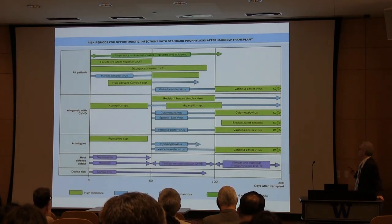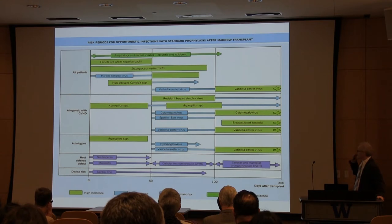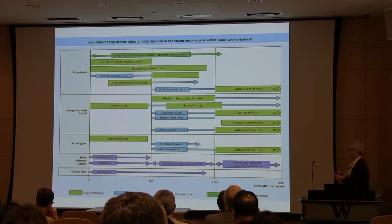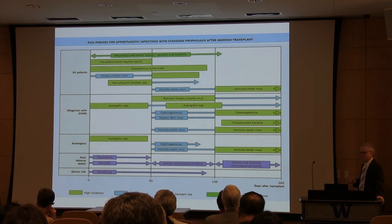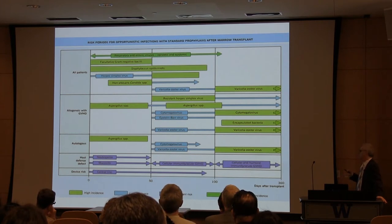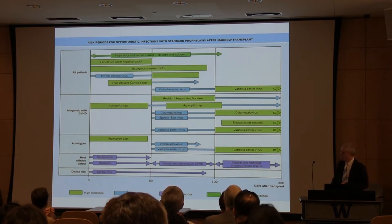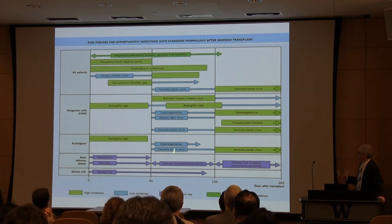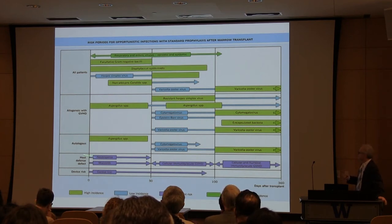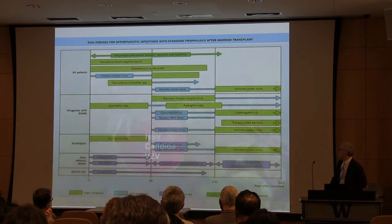One important feature of infection after transplantation is that they follow a specific time pattern, outlined here by pathogenic groups. This time pattern of when we expect the peak of infections is related to the host defense mechanisms affected by the transplant process or the medications used to treat complications. For instance, in the very early period, herpes simplex virus is a major threat, as is fungal disease, while CMV occurs a little bit later.